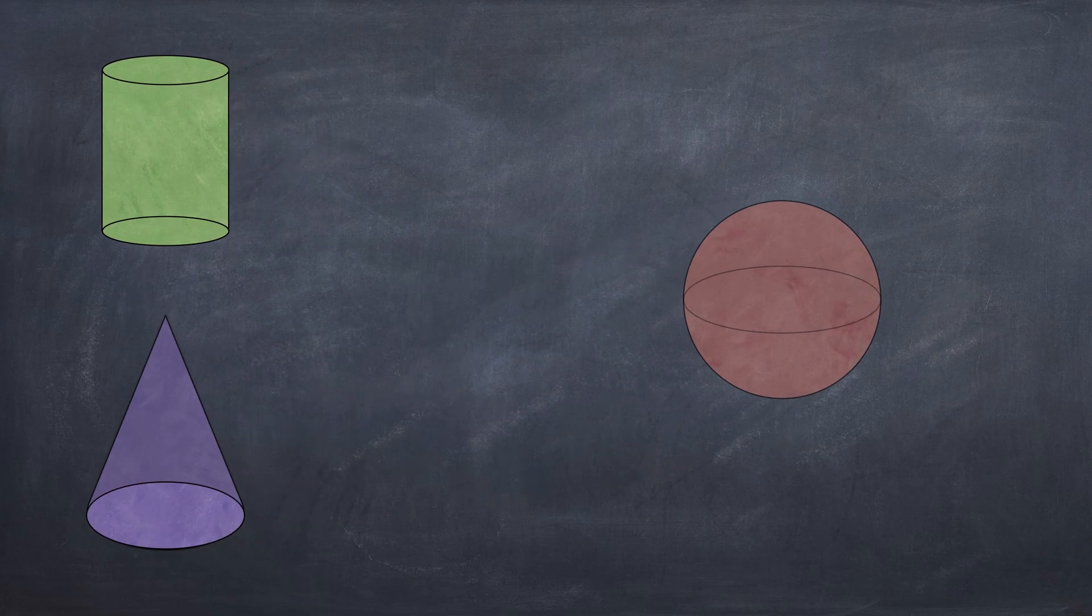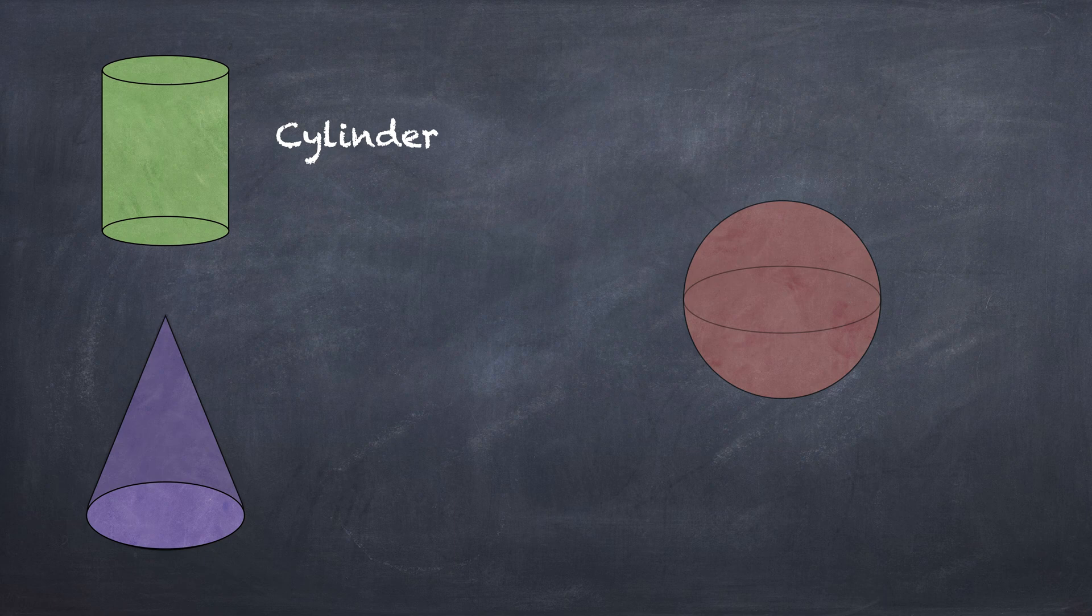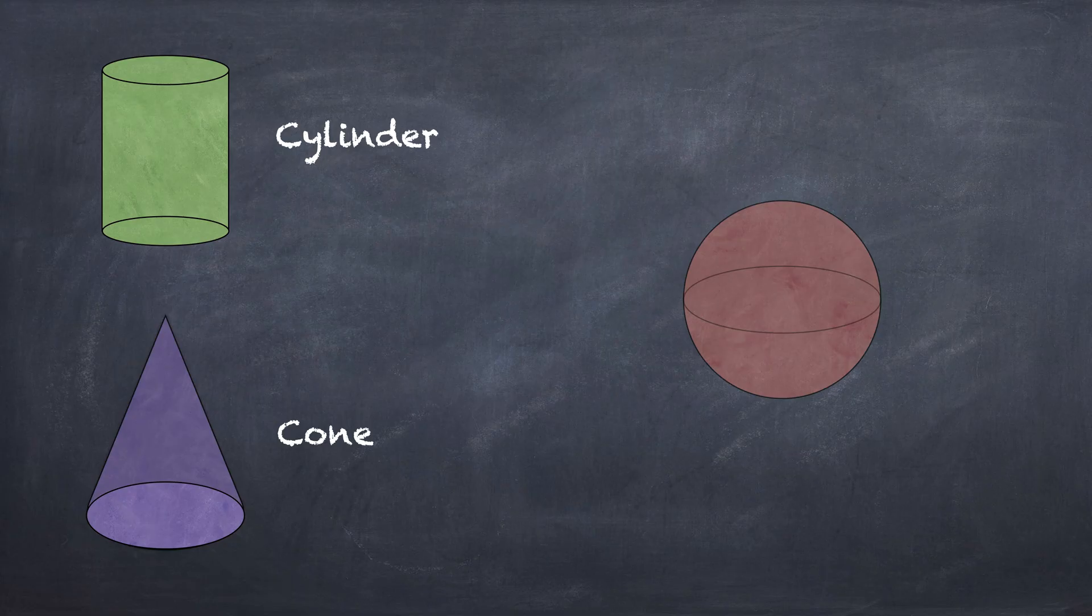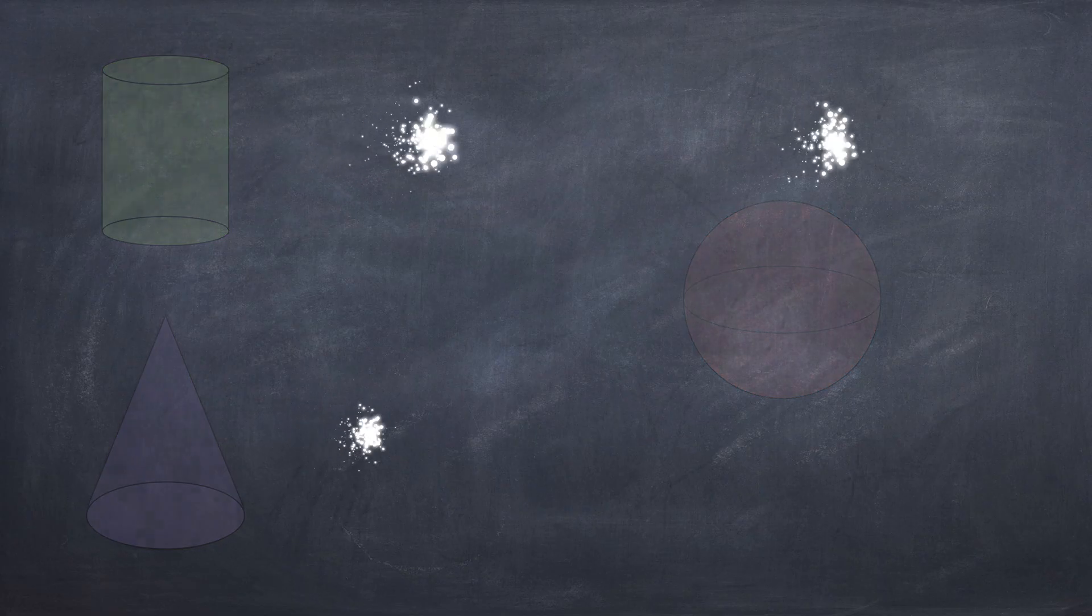So we're going to review the shapes. We got a cylinder, that's where it has a circle base and then it's like the equivalent of a rectangular prism. And then you have a cone, which again has got a circle base but then narrows to a point at the top. And then you have a sphere which is essentially just a 3D circle. So those are the three shapes.